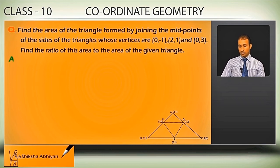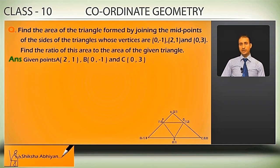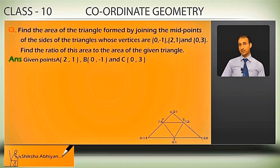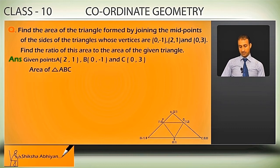I am letting triangle ABC, in which A is equal to (2,1), B is equal to (0,-1), and C is equal to (0,3). You can see the figure. I will find the midpoints of AB, BC, and AC, and then find the area of the triangle formed by those midpoints. I have named it ABC.